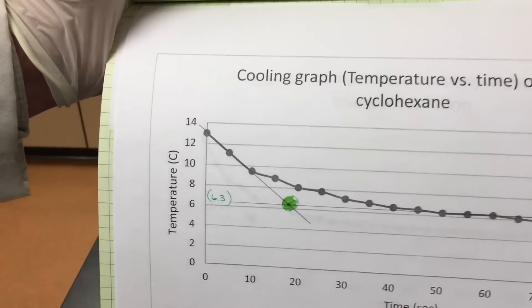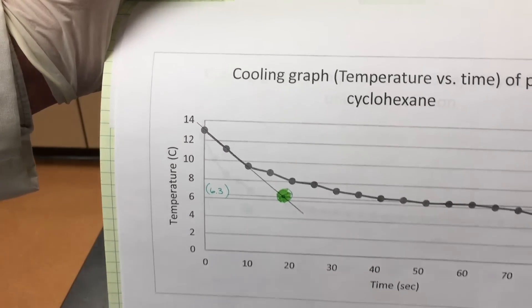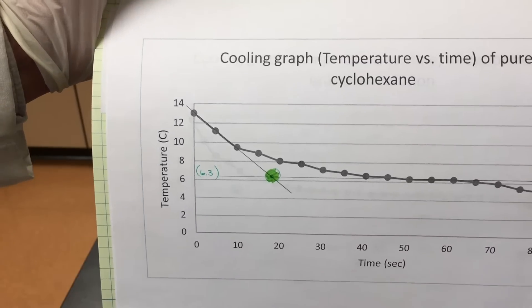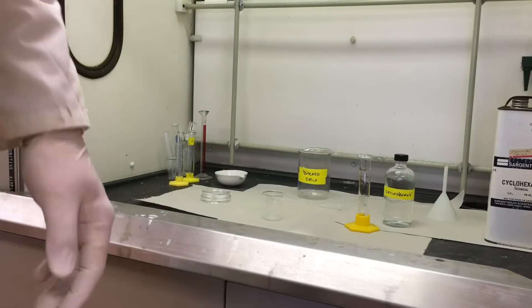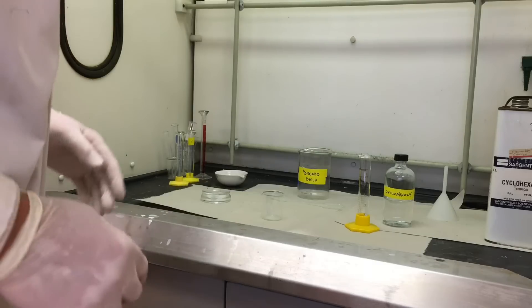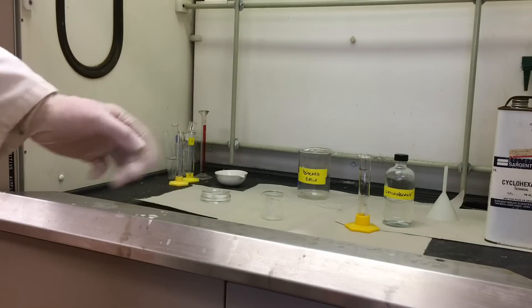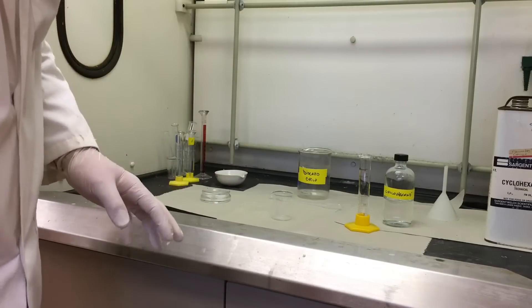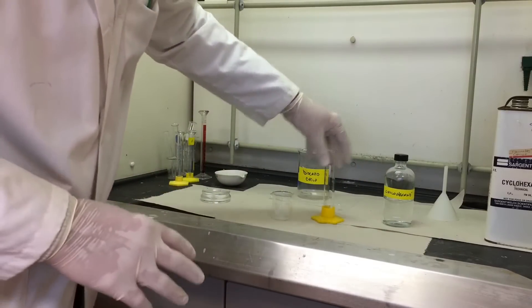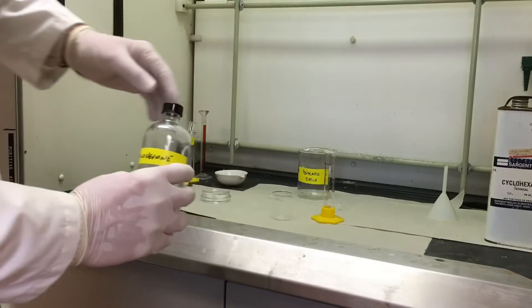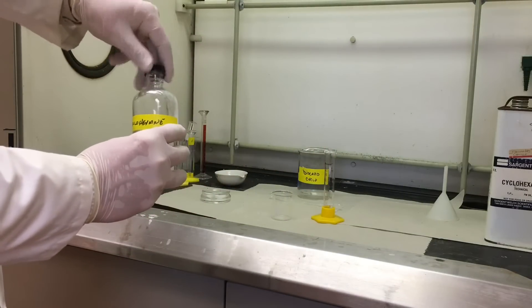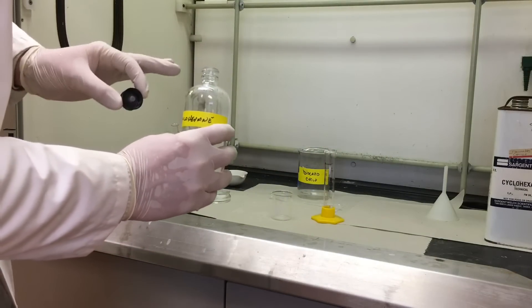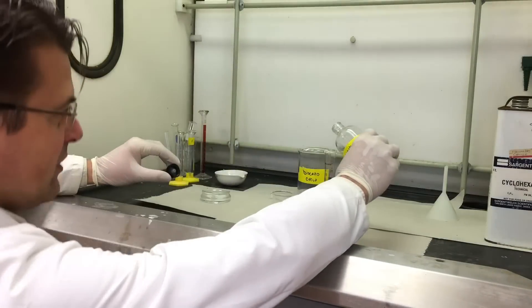Now that we have the freezing point, it's time to repeat the experiment, but this time with the unknown. For the second part of the experiment, we're gonna need a very precise amount of cyclohexane and also a very precise amount of the unknown. First we'll just pour 20 milliliters of cyclohexane and then we're gonna measure the mass of that.